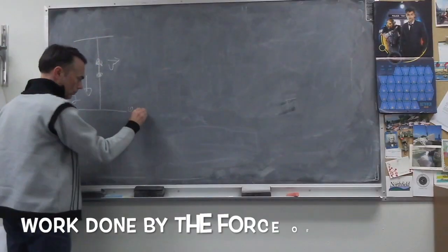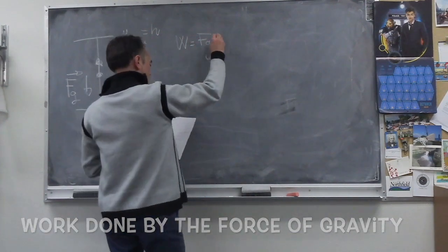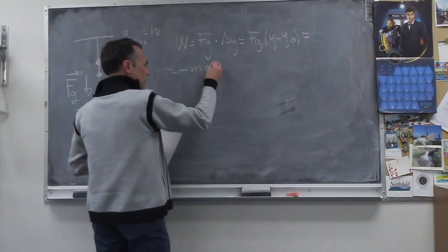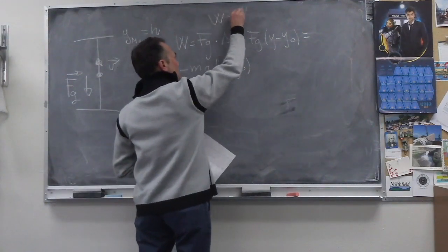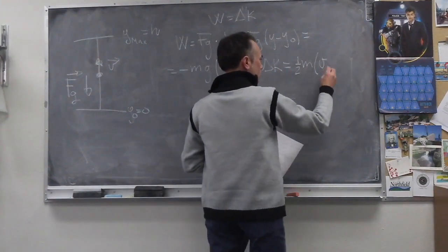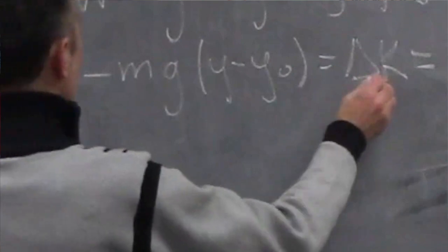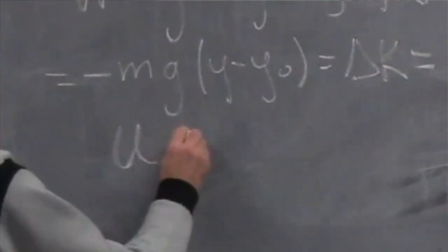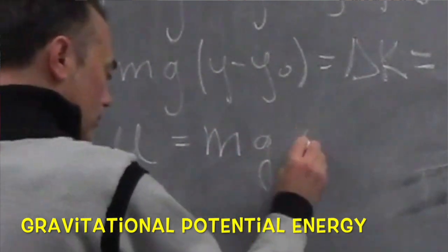We can calculate the work done by the force of gravity: F·Δy, where F is mg and Δy is y_final minus y_naught. From the work-energy theorem, we know that this is equal to the change in kinetic energy, one half mv squared. This term, mgy, we call the potential energy due to gravity — the gravitational potential energy.